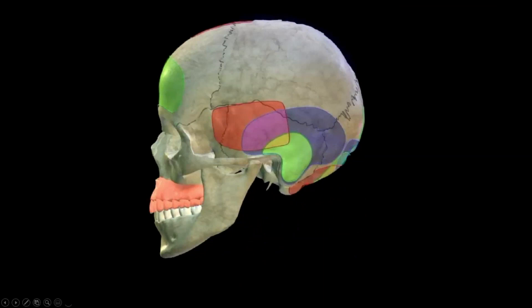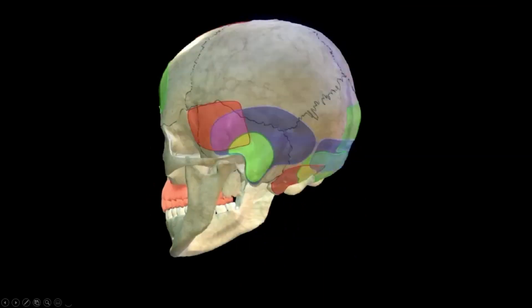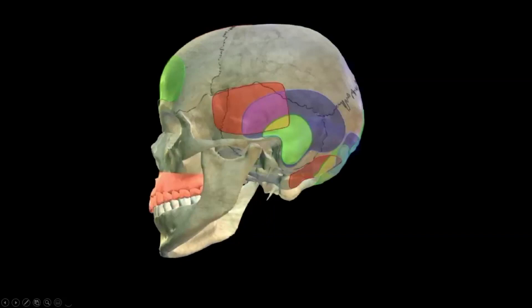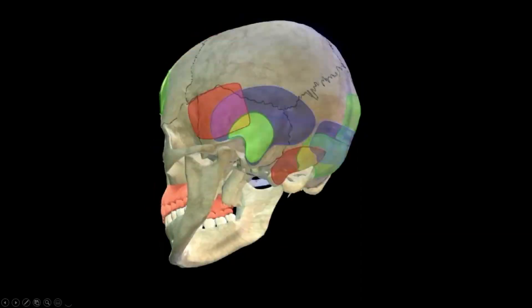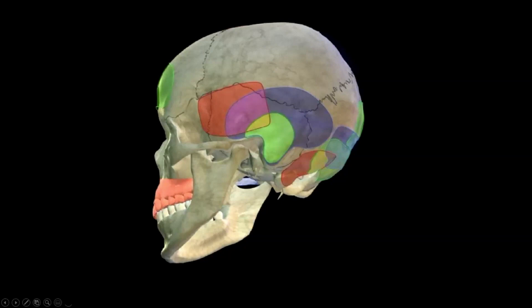We're going to consider the anterior transtemporal, posterior transtemporal, or the combined approach. That gives much better exposure to the inferior portion of the clivus and the entire petroclival region, cerebellopontine angle, perimetencephalic, and brainstem — everything lateral from anterior to posterior, basically almost all clivus. The only limit is the jugular globe at this level, so everything below the jugular globe requires a more inferior approach.